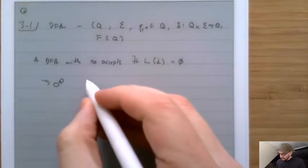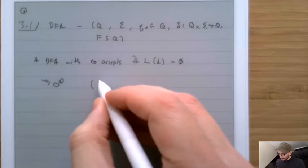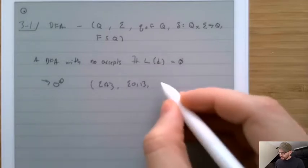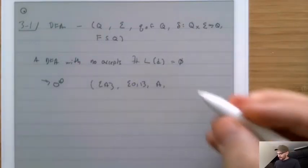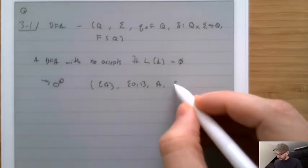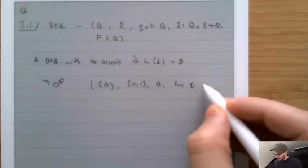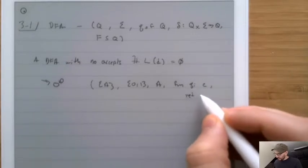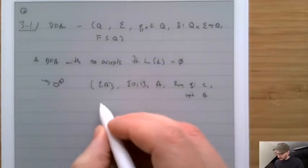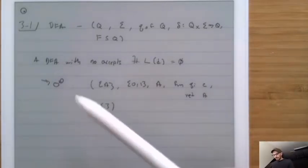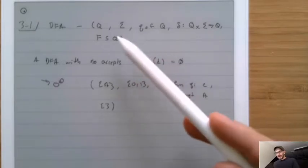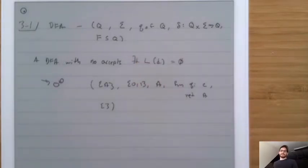We could also write this in tuple form: there's a state A, the alphabet is {0, 1}, the starting state is A, the delta function takes QI and C and always returns A no matter what it's called with, and the accepting set is empty. So we could draw a picture or write it down this way — this is a DFA that accepts nothing.